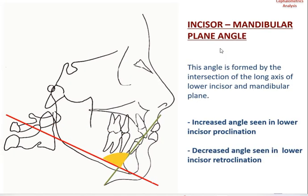Coming to the incisor mandibular plane angle in Downs' analysis: you draw a line along the long axis of the lower incisor and construct the mandibular plane from gonion to gnathion. If there is an increased angle, the lower incisors are proclined. If the angle is decreased, the lower incisors are retroclined.